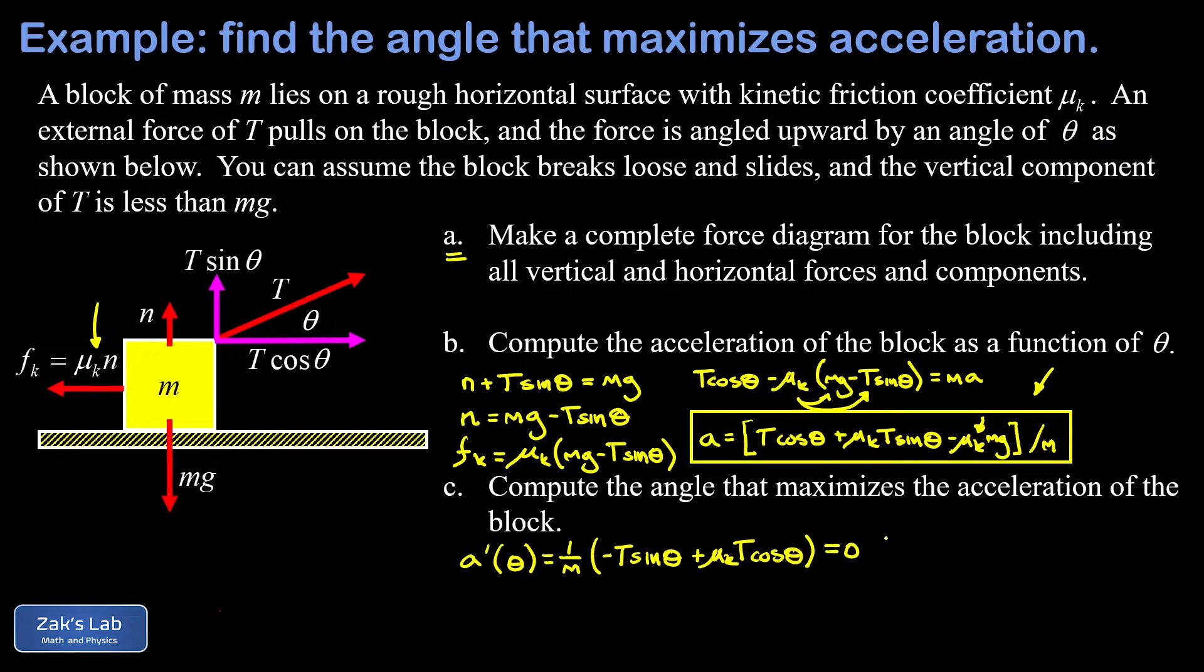Setting it equal to zero, I'm able to multiply both sides by m, divide both sides by T, and I end up with this simple expression: negative sin theta plus mu_k cos theta equals zero. Now I'm going to add sin theta to both sides and divide by the cosine of theta, and that gives me mu_k equals tan theta.